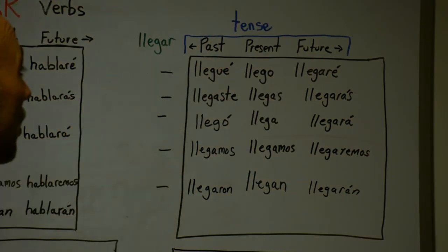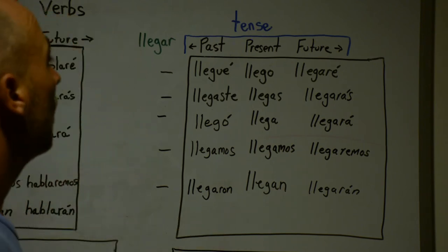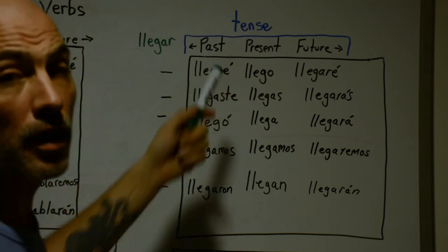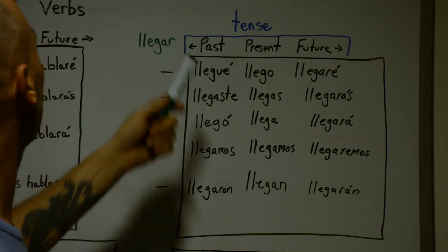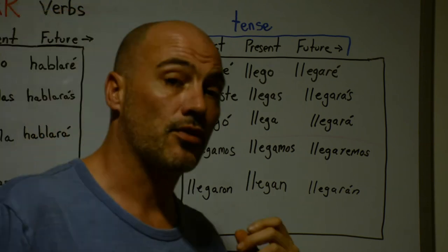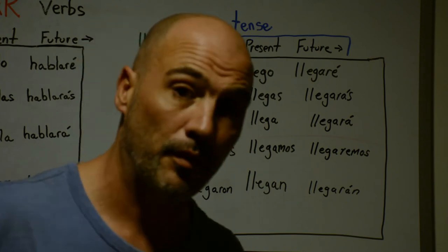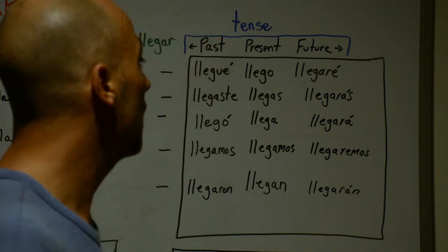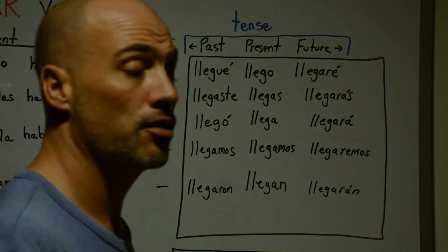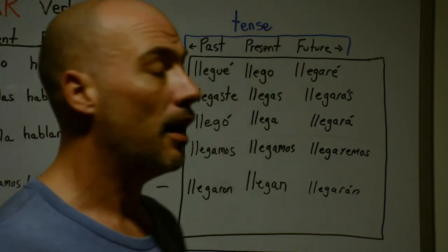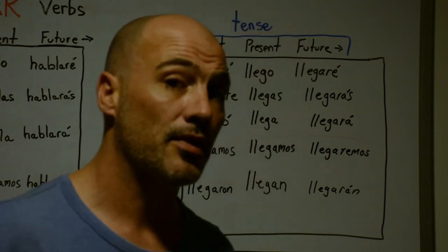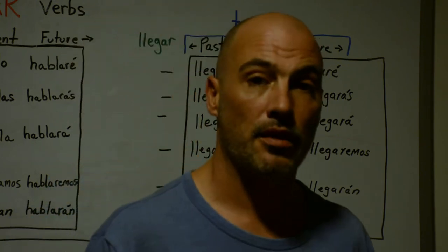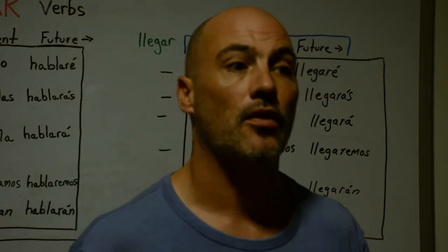The next AR verb is llegar — to arrive. Now someone's probably spotted it already: why is there a 'u' in there? The quick simple answer is it's called a stem change. Stem changes happen in English too — you just don't realize it because it's something you've committed to memory.